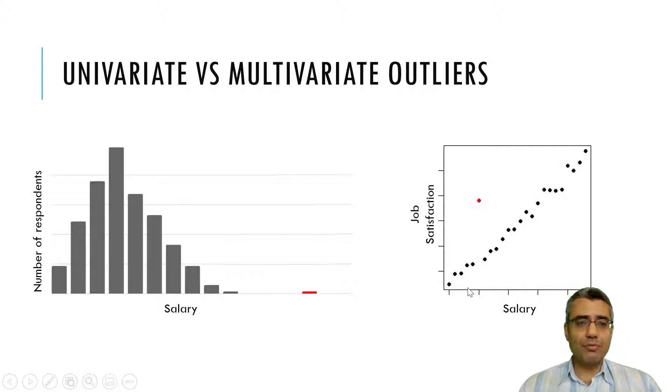However, for multivariate outliers, we identify cases that they have different behavior from the lens of more than one variable. For example here, job satisfaction and salary. So here we plot job satisfaction against salary, and as you can see, by increasing salary means moving to the right side, job satisfaction is increasing as well. So when I'm moving to the right side, job satisfaction is increasing.